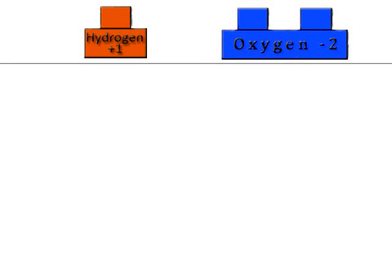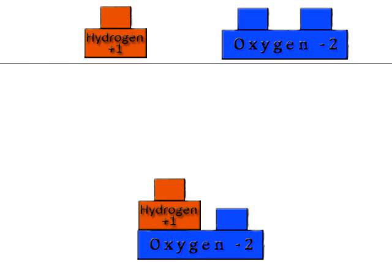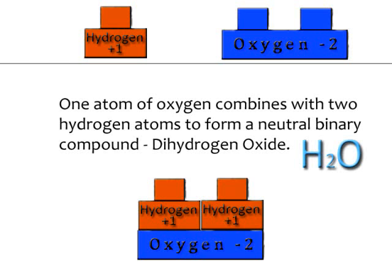We begin with one atom of oxygen and one atom of hydrogen. Notice that the plus 1 of the hydrogen does not cover the minus 2 of the oxygen. We add an additional hydrogen atom. Now the 2 of the oxygen are covered by the 2 of the hydrogen. We now have one atom of oxygen combined with 2 atoms of hydrogen to form a neutral binary compound, dihydrogen oxide, or commonly known as water.